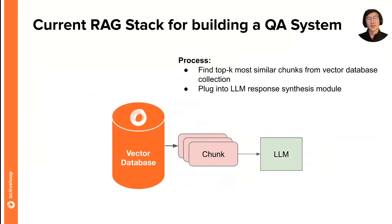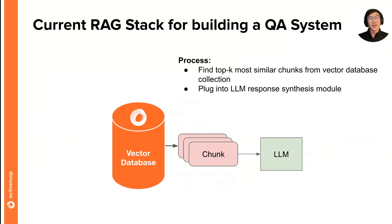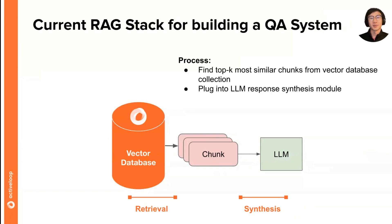Once the data is stored after the ingestion step, given a user query, you first do retrieval, where you find the top-k most similar chunks from the vector database collection, and then you plug that into the LLM response synthesis model. So given a user query, you first use the vector database to fetch the relevant context from the storage system, and then you take that context and figure out a way to stuff it into the input prompt of the LLM.